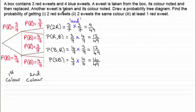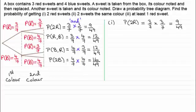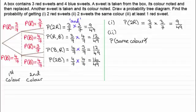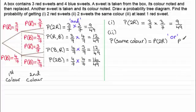When it comes to working out the probability of two red sweets we've already done that — it equals 3/7 times 3/7, which is 9/49. Now for part two, we've got to work out the probability of two sweets the same colour. The probability of the same colour is equal to getting two reds OR two blues. When you have an OR situation, we always add our probabilities — we find the total of them.